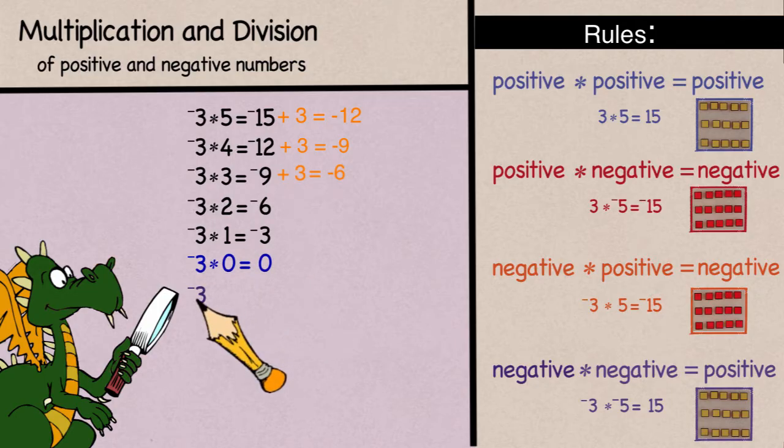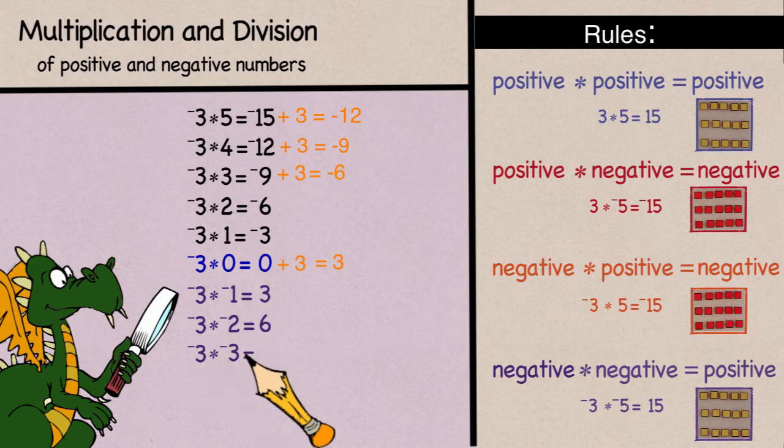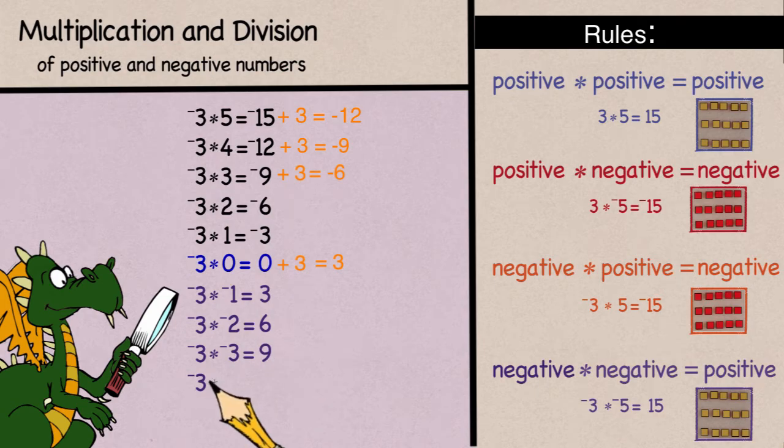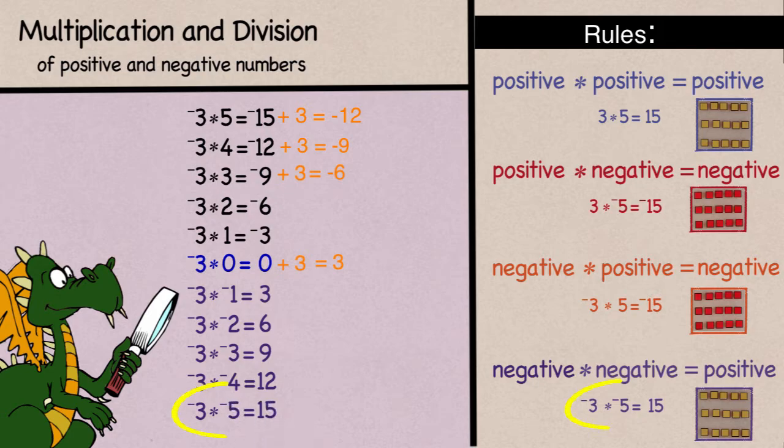What about negative 3 times negative 1? While continuing the pattern, we'll add 3 to 0, and that would give us 3. And negative 3 times negative 2 would be 6, and negative 3 times negative 3 is 9, negative 3 times negative 4 is 12, and negative 3 times negative 5 is 15, just like we got before.